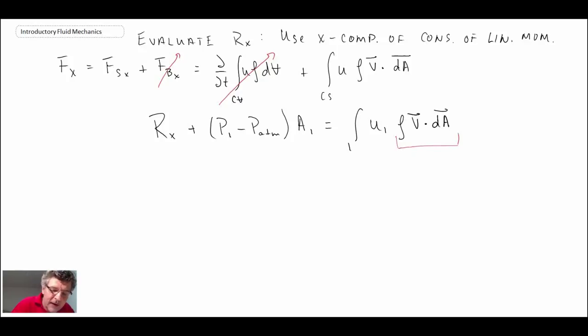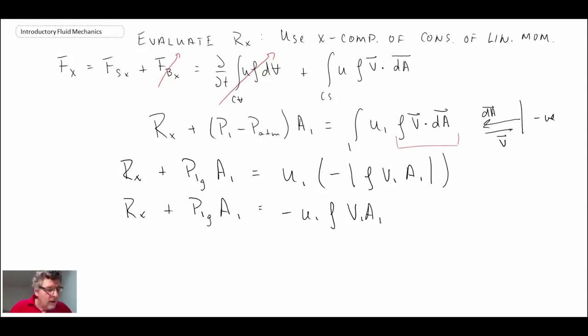So writing out the left hand side and then the right hand side, u1, we know that the u direction or u1 is a positive value. But it's multiplied by, if you recall, we talked about this earlier. For control surface one, the area vector will be in that direction, and the velocity is coming in in that way. So the dot product is going to give us a negative. So we have that.